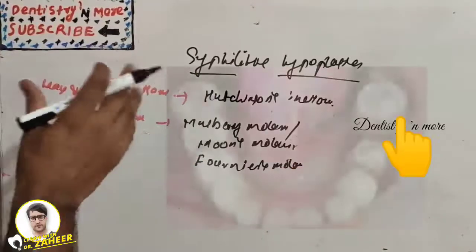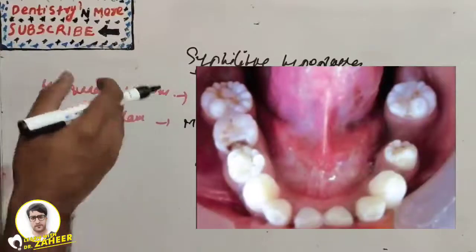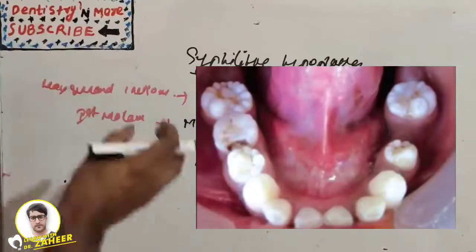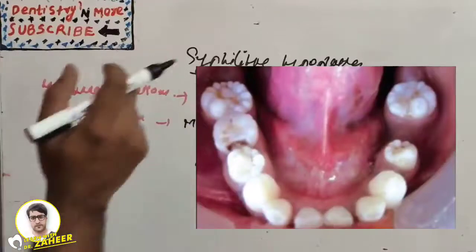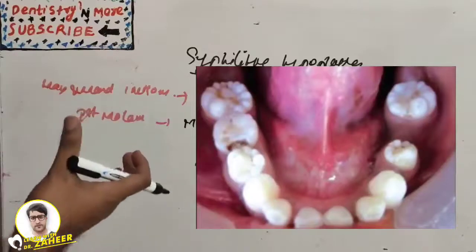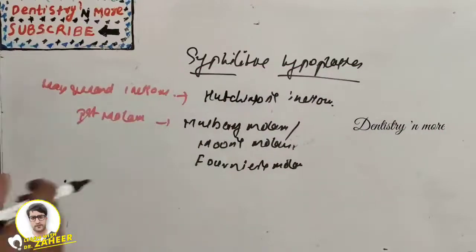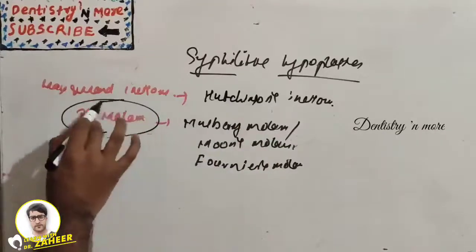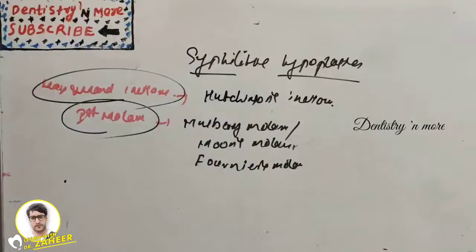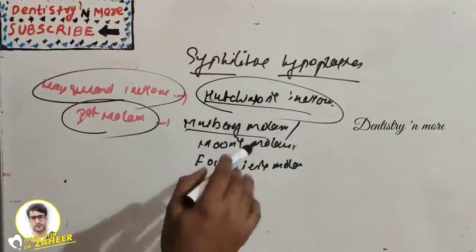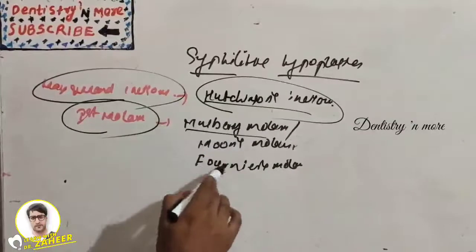Mulberry molars — also called Moon's molars or Faunus molars — affect the crown of the first molar in congenital syphilis. The enamel of the occlusal third appears arranged in an agglomerate mass or globules rather than as well-formed cusps, as seen in the picture. The crown is narrower on the occlusal surface than at the cervical margin. These are the two distinctive features of congenital syphilis: Hutchinson's incisors and mulberry molars.